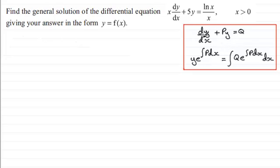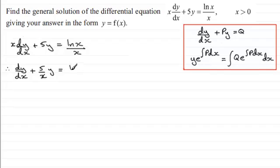So to get this in this particular format, we'll take the equation and divide throughout by x. So I'll just copy the equation down first: x dy/dx plus 5y equals ln(x)/x. To get it in this form we need to divide by x. So dividing through by x gives me dy/dx plus 5/x times y equals ln(x)/x squared.